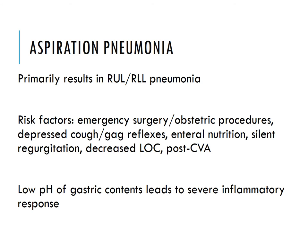Risk factors for aspiration pneumonia include emergency surgery and obstetric procedures, where patients are flat on their back and intubated, compromising gag reflexes and allowing gastric contents to travel from the stomach into the lungs. Enteral nutrition via NG or G-tube is also a risk — always stop the tube feeding before repositioning or rolling the patient to prevent aspiration.